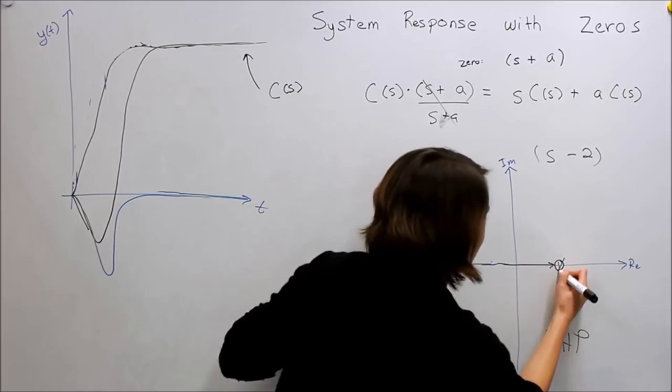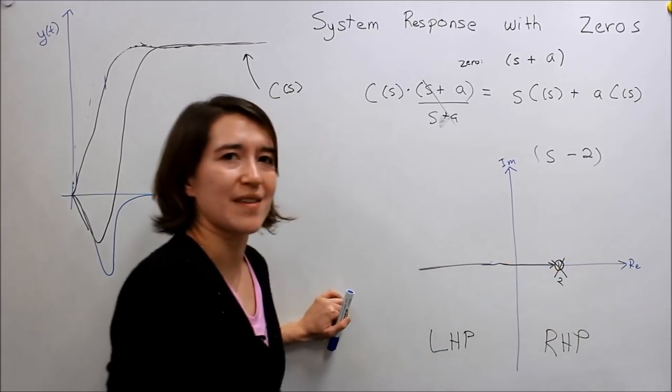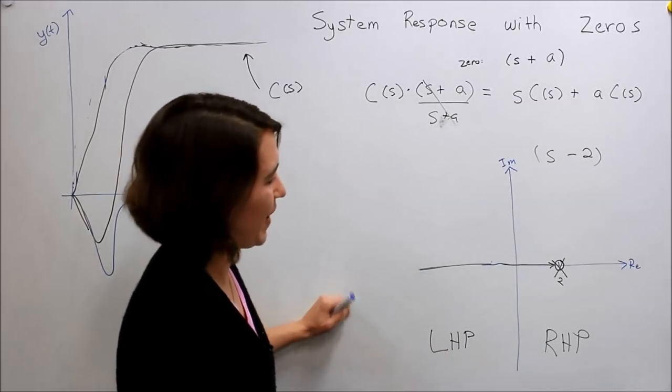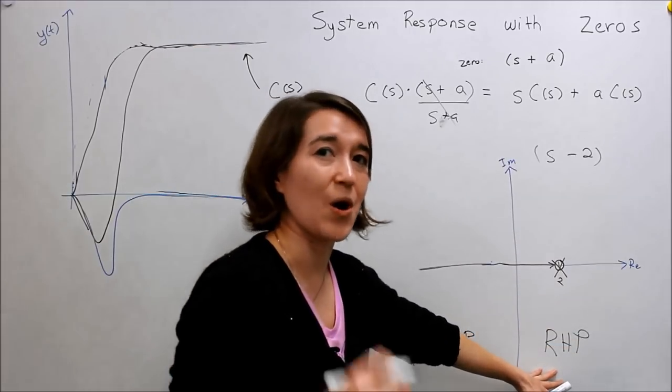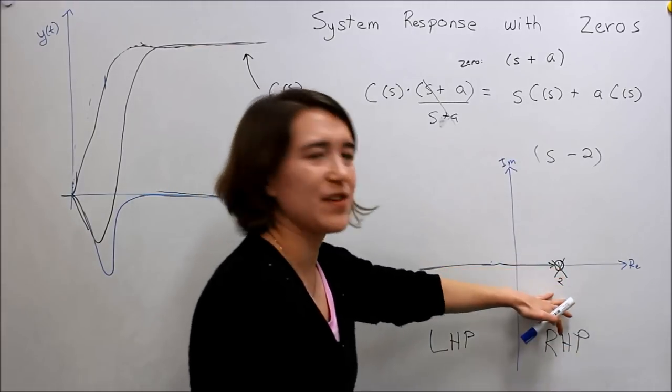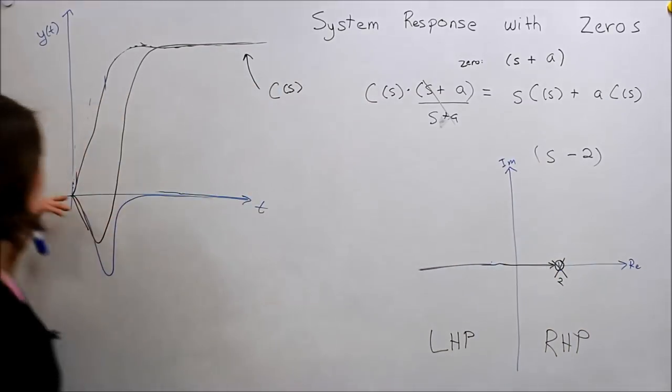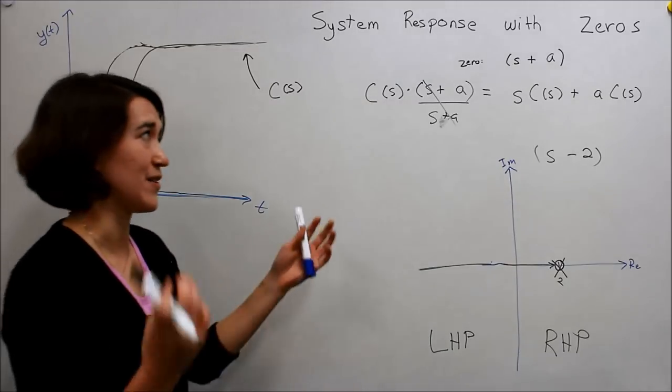So what we do is we try to use our controller to make a pole directly over that zero, which can be hard because sometimes that zero moves around. But anyway, the short story is right half plane zeros are troublesome. And so we often use controllers to try to negate them so that we don't get this kind of dipping initial conditions in our step functions or step responses.